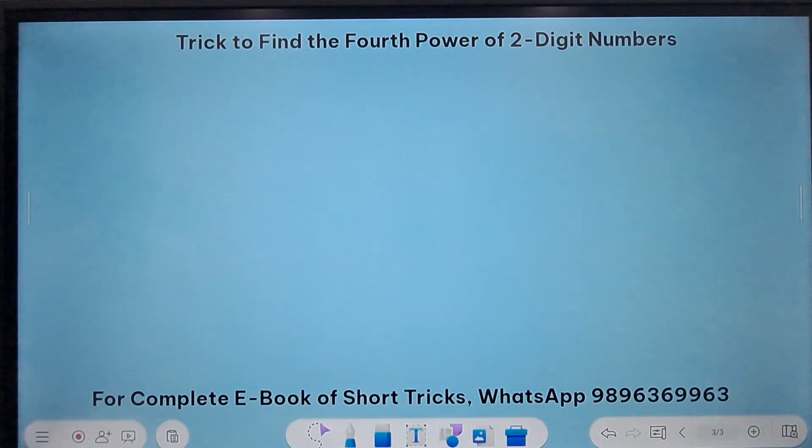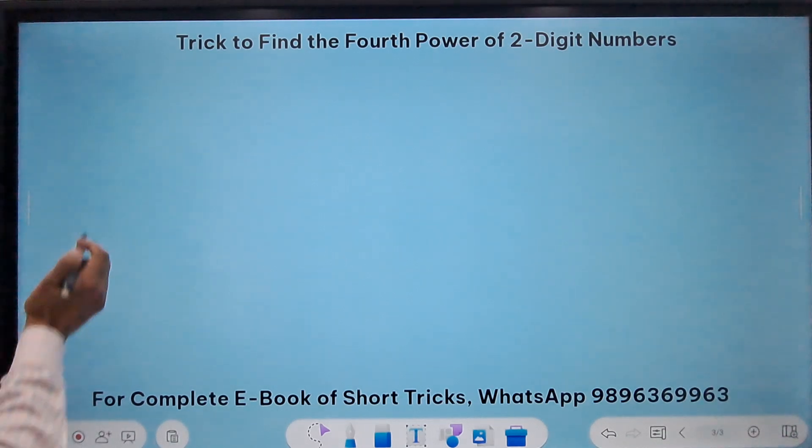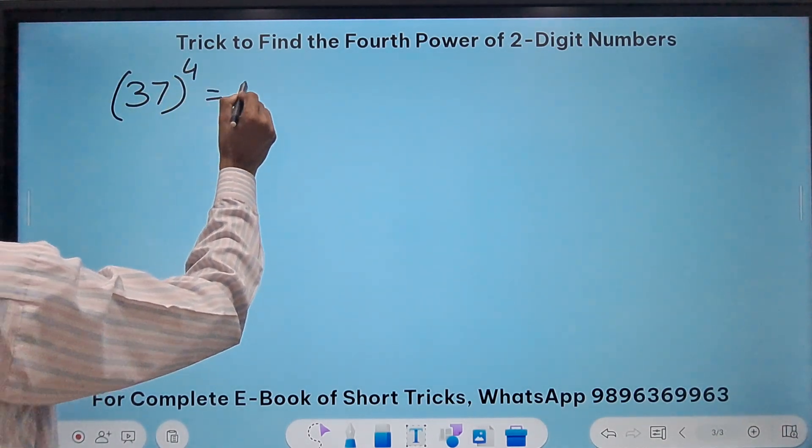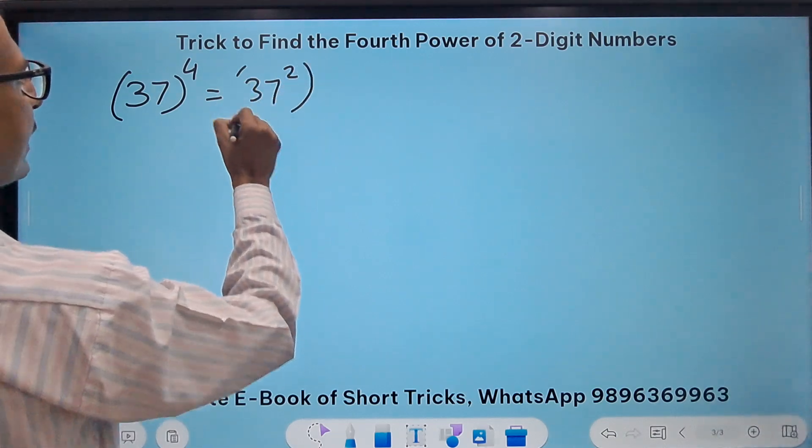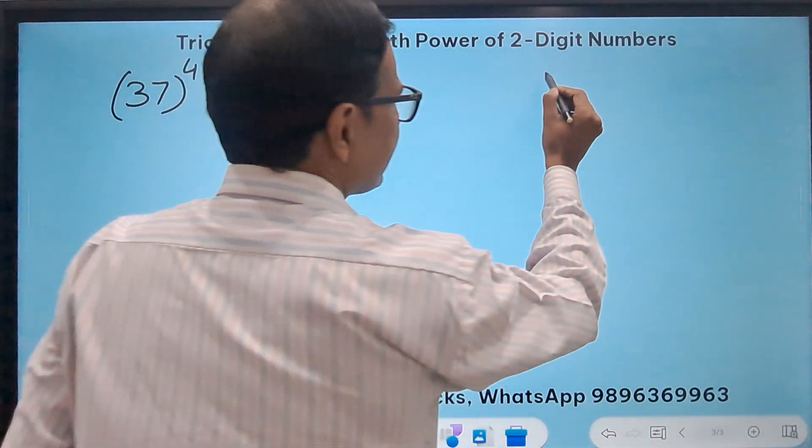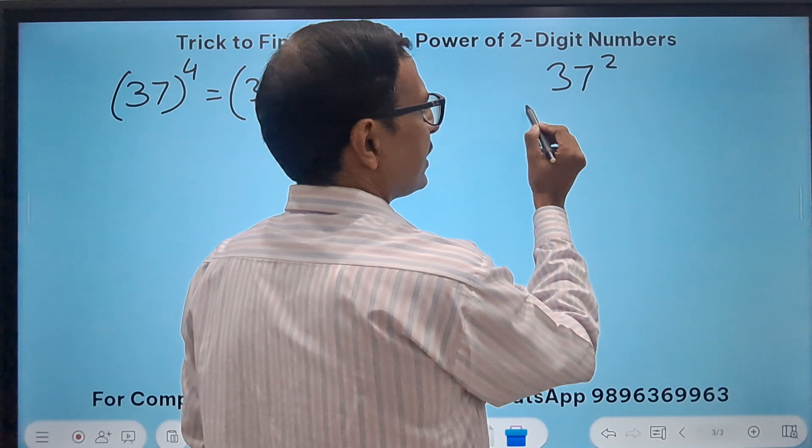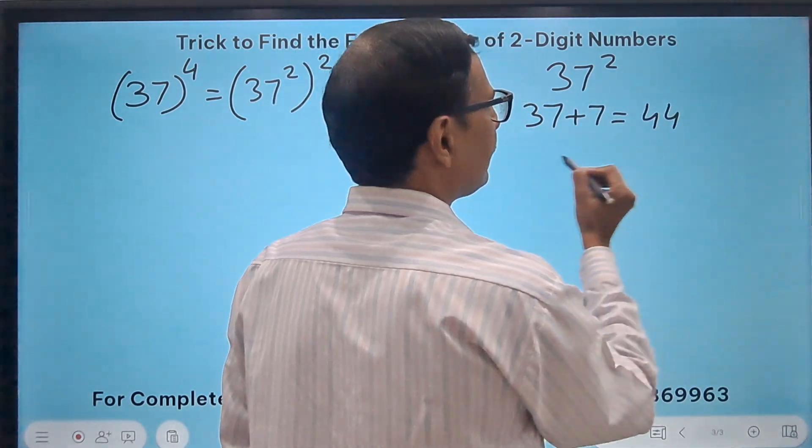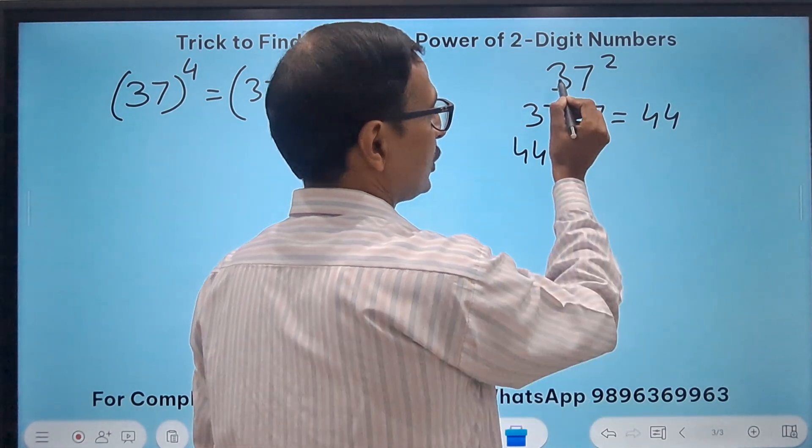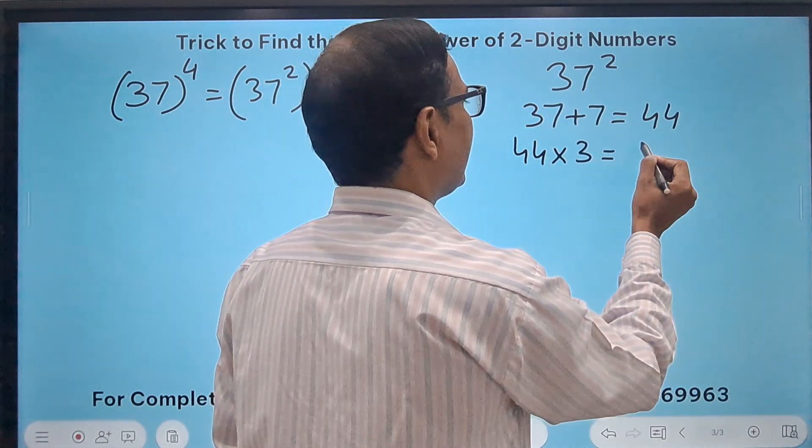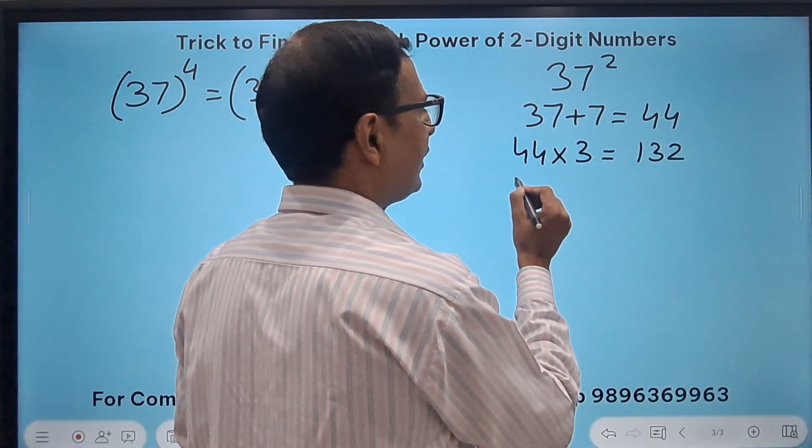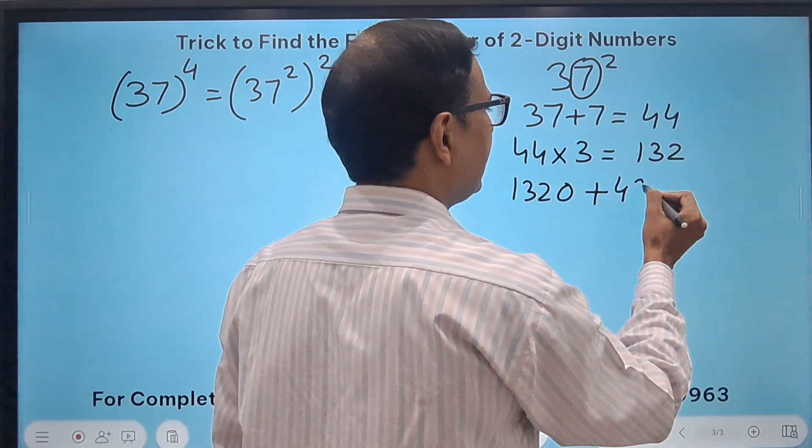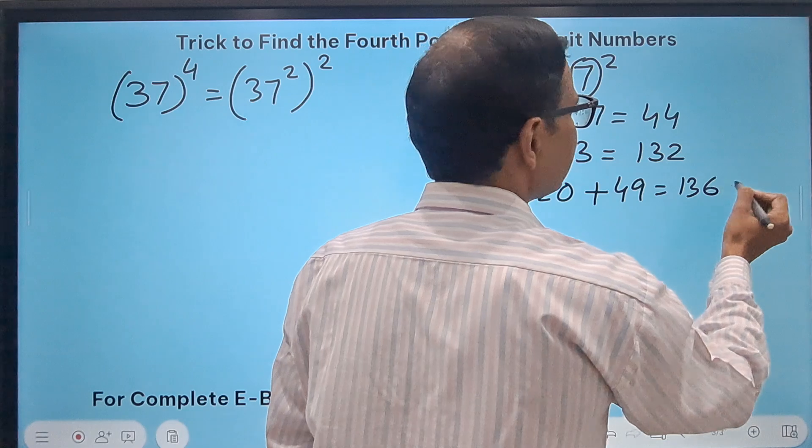And you will be really amazed that the method doesn't go wrong even once. Let's take one more question and then I'll give you a DIY, do it yourself, question. So let's do 37 raised to power 4. We know it is 37 square raised to power square, right? So the first thing is getting 37 square.